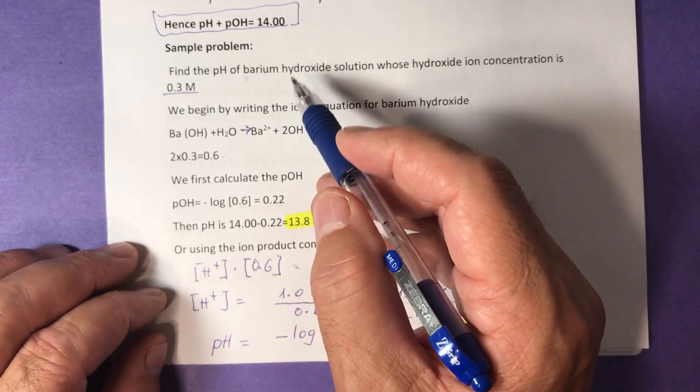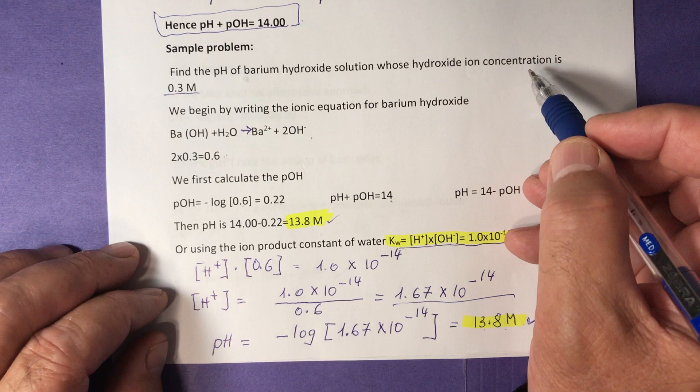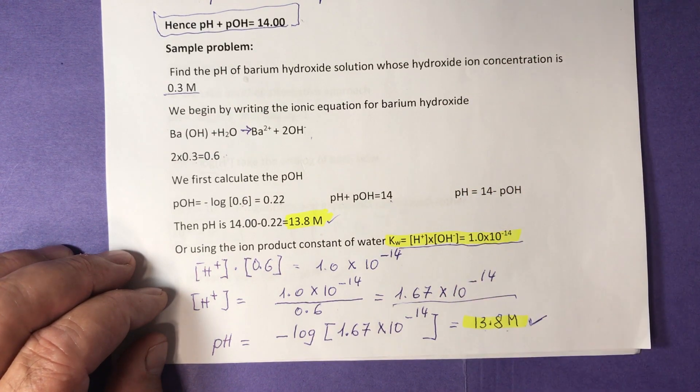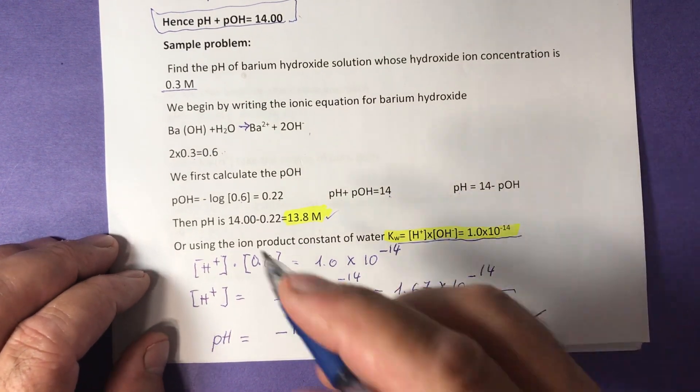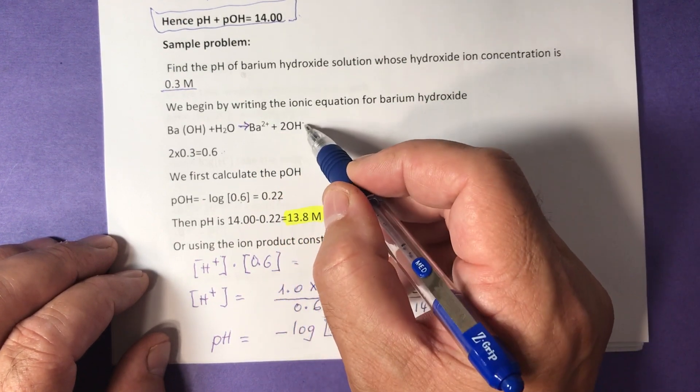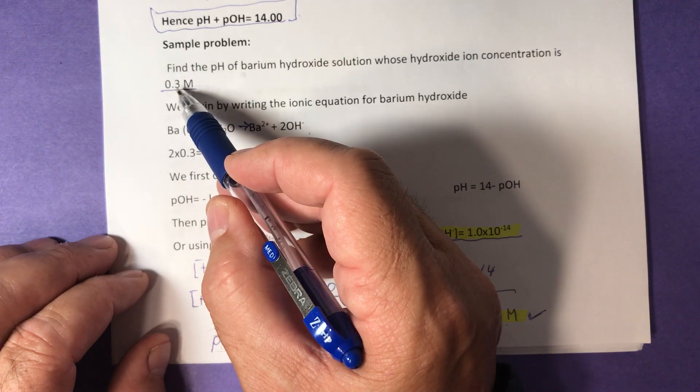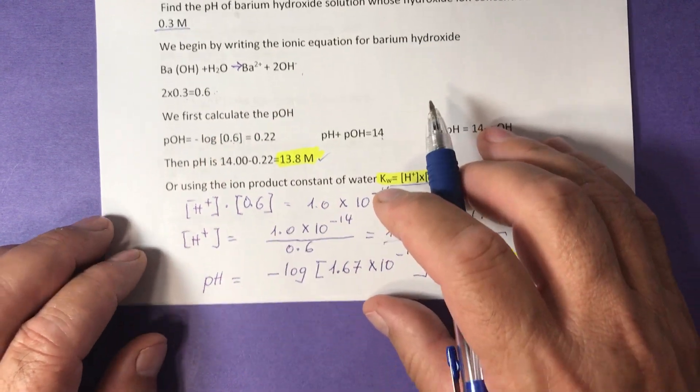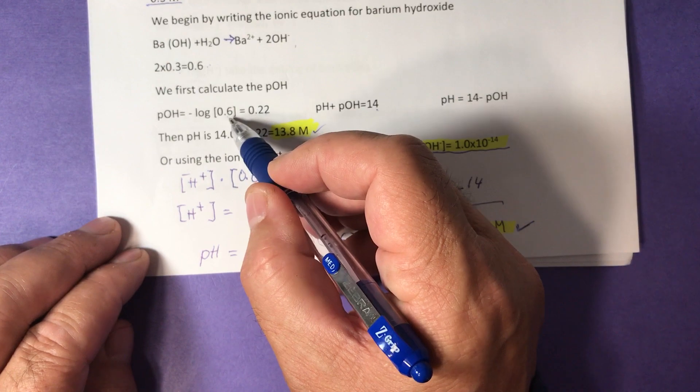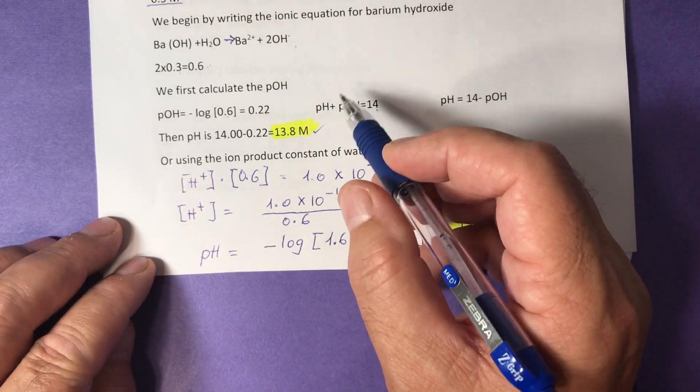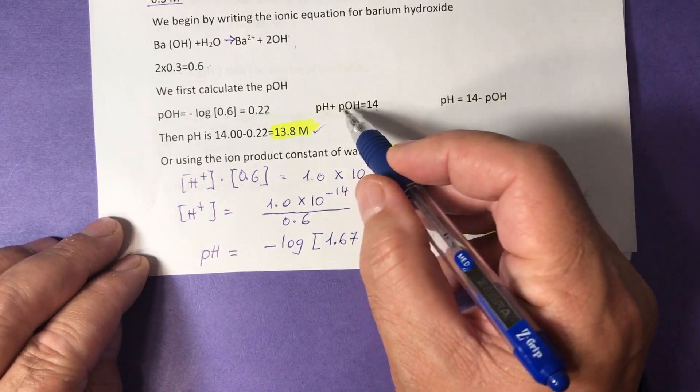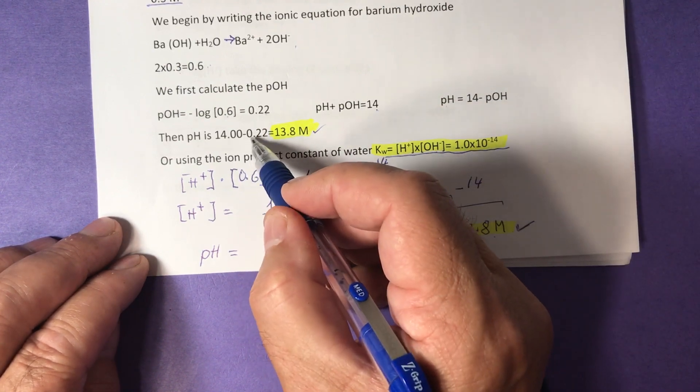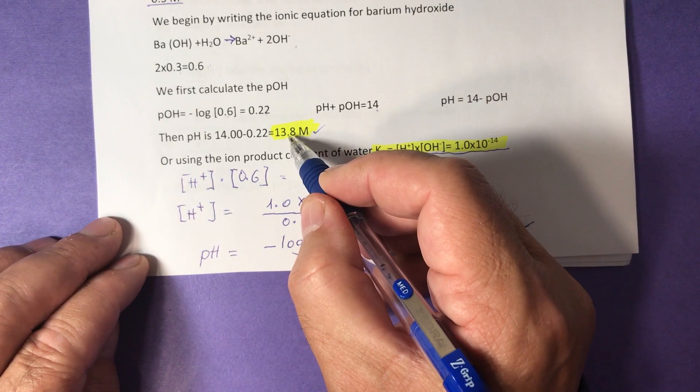Another sample problem. Find the pH of barium hydroxide solution whose hydroxide ion concentration is 0.3 molar. We begin by writing the ionic equation for barium hydroxide, which is a strong base and is completely dissociated in water, producing barium ions and 2 OH minus. We have to multiply the concentration of the base here by 2 because we have 2 OH minus. So we get the concentration of OH minus. Use the formula pOH equals negative log of 0.6, which is 0.22. We know now that pH plus pOH is 14. Rearrange this equation, and you get pH equals 14 minus pOH. 14 minus 0.22 is 13.8 molar.